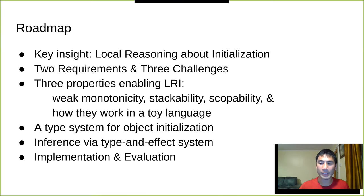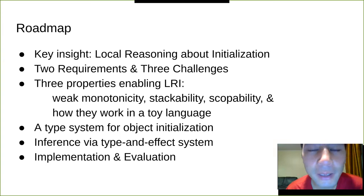Here's a roadmap. I don't do a generic useless roadmap where it's like here's the introduction, here's the middle, and here's the end. I have a roadmap that contains the things that I want to talk about specifically. The key insight of this paper is about local reasoning about initialization. There are two requirements and three challenges. Then there's three properties that enable LRI: weak monotonicity, stackability, and scopability. And the paper talks about how they work in a toy language. Then it presents a type system for object initialization. The main limitation is that it requires a bunch of annotations or else produces a bunch of warnings. So the authors then proposed inference via type and effect system. And they discuss implementation and evaluation.